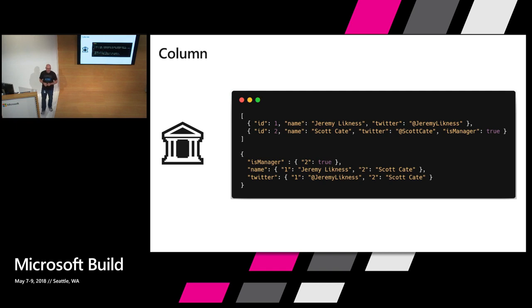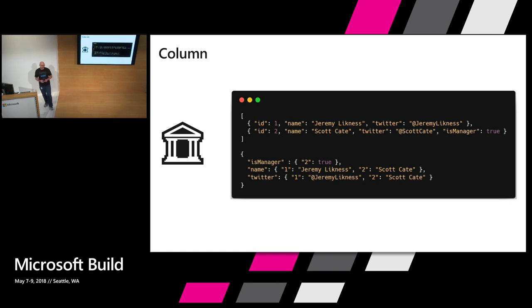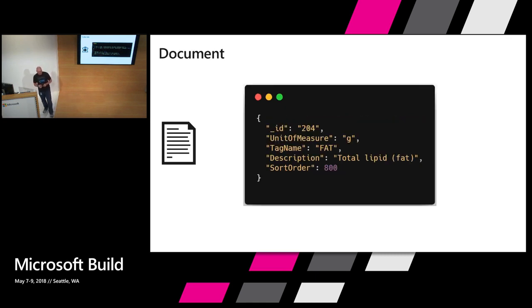The other type of NoSQL database is a column store. You can have data organized in what we're used to as rows, but conceptually it's organized in the database as columns. This is highly optimized to query across specific columns in your data set. And if you have really large documents and are only pulling back a few columns, you can retrieve those columns quickly with this approach.